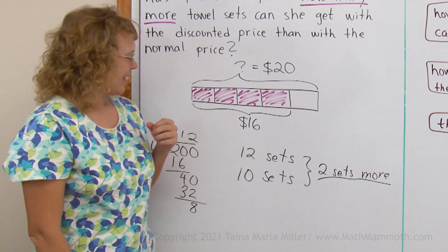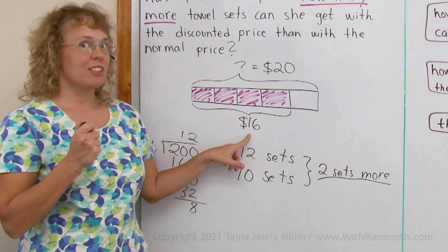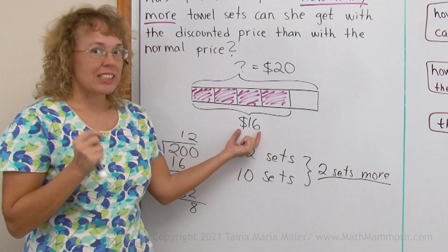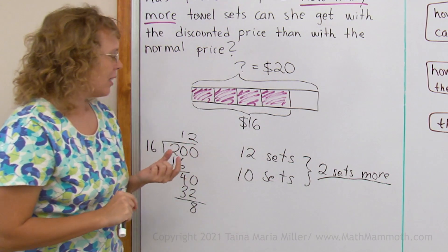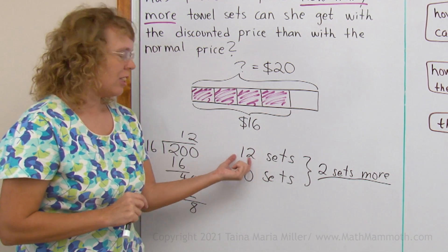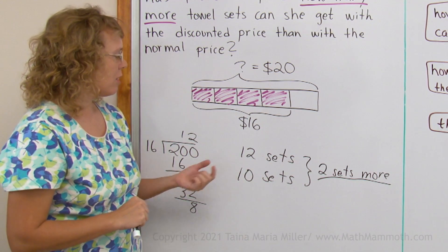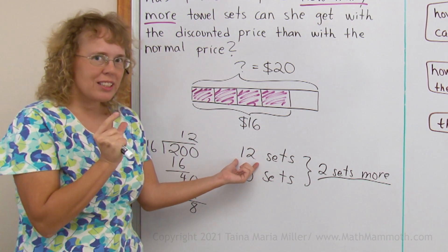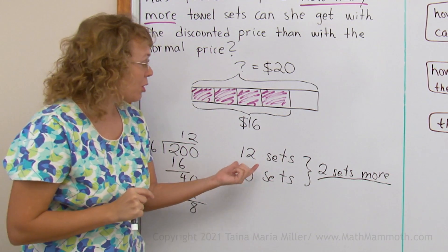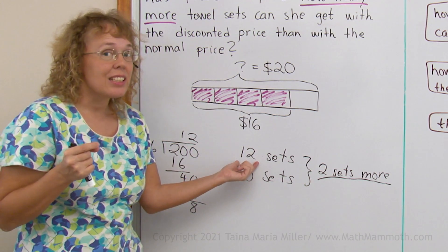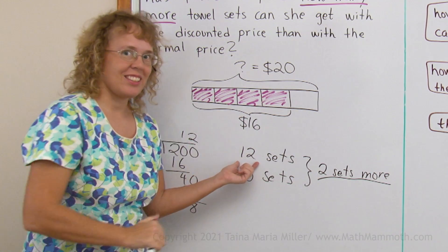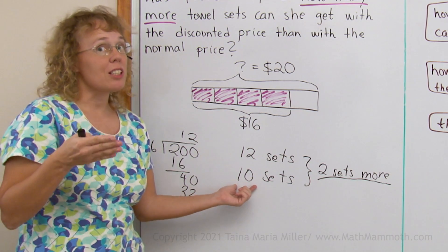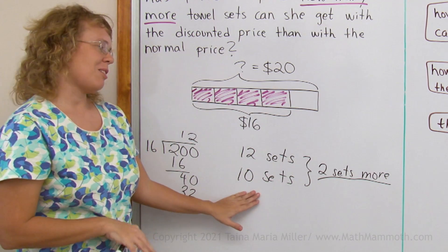Epilogue: did it really matter that I used $16 instead of $15.96? The difference between those is only 4 cents. When we were figuring out how many sets she got with the discounted price — 12 sets — could she have gotten a 13th set if I had used $15.96? There's a 4-cent difference per set, so for 12 sets the difference would be 48 cents, which is nowhere near enough to buy a 13th set. The same applies to the normal price — the difference between $20 and the real normal price is just a few cents, so it's not going to make a difference.